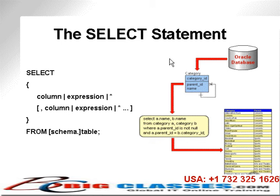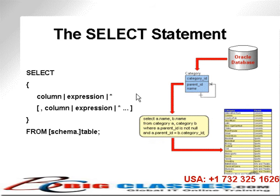Let's talk about the Select Statement. This is a very simple syntax diagram. All I'm doing is saying Select Column, Expression, or Asterisk. The square brackets mean that optionally I can add any number of Column, Expression, or Asterisk. A column is a column in a table. An Expression is a calculation — something in parentheses — that says take this column, multiply it by 5, or take a part of the string in that column. Asterisk simply means retrieve all the columns from a table.